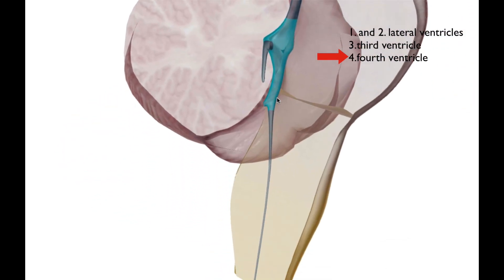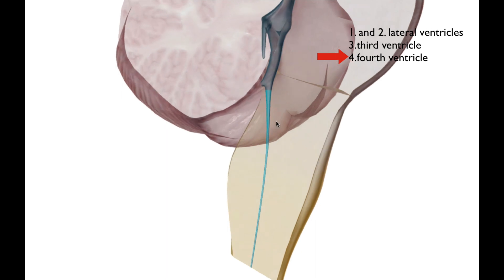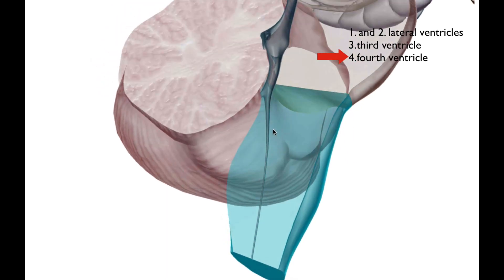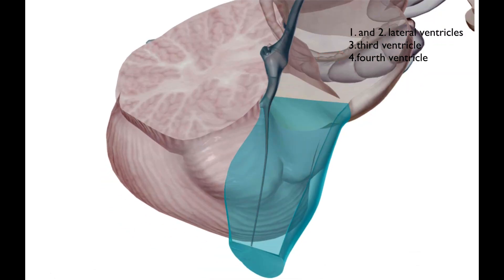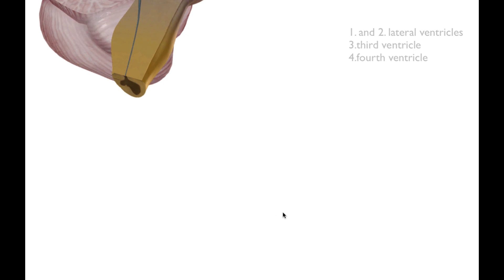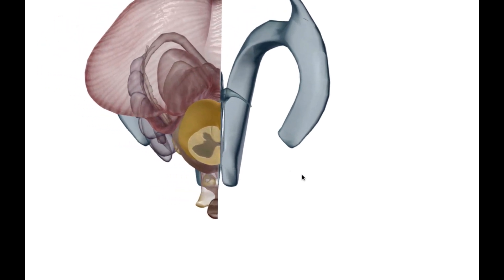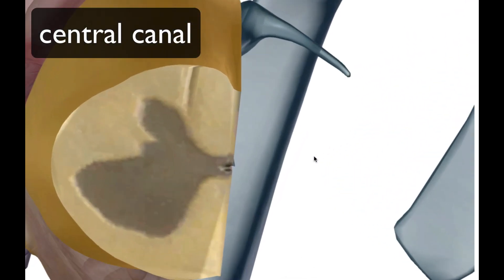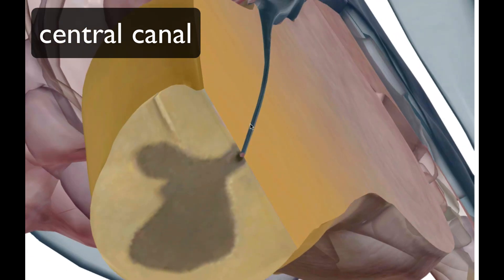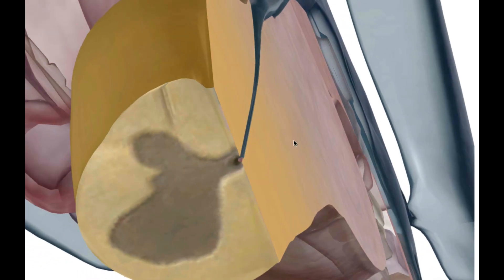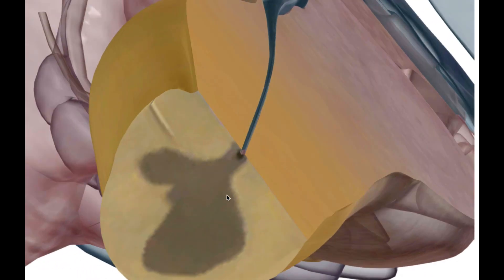The fourth ventricle drains into the central canal that runs down the medulla oblongata and continues all the way down the spinal cord. If you recall the transverse cut of the spinal cord, we have our gray matter and white matter, and the central canal runs right down the middle. That's the commissure tissue of the gray matter — the H-shape — and cerebrospinal fluid runs all the way down the spinal cord from there.